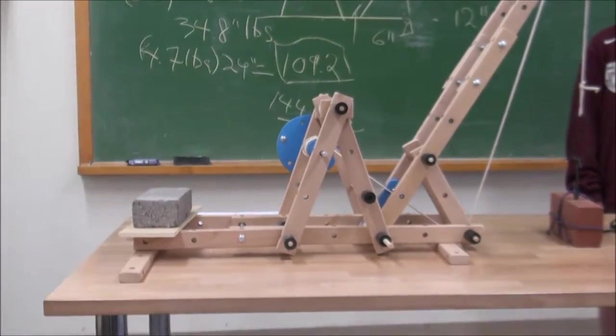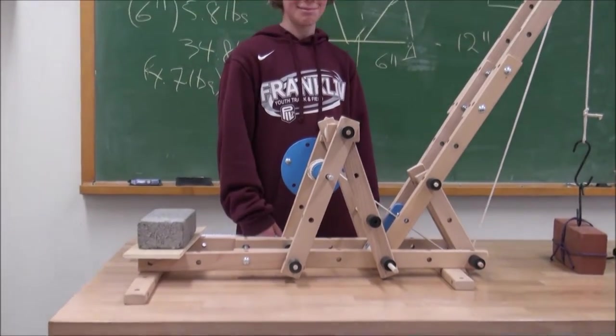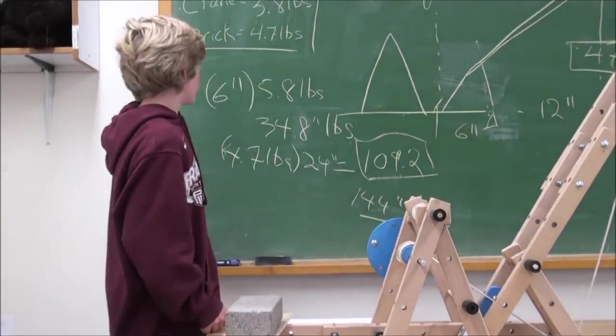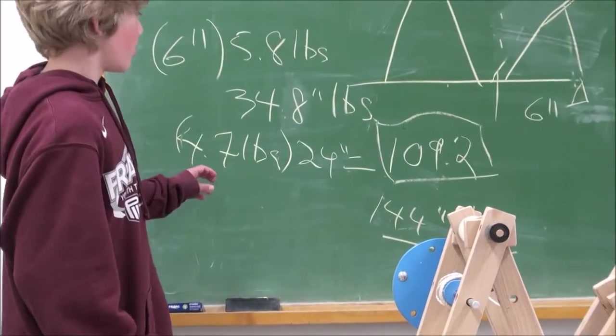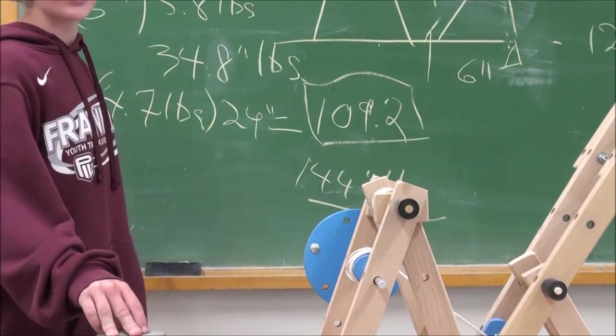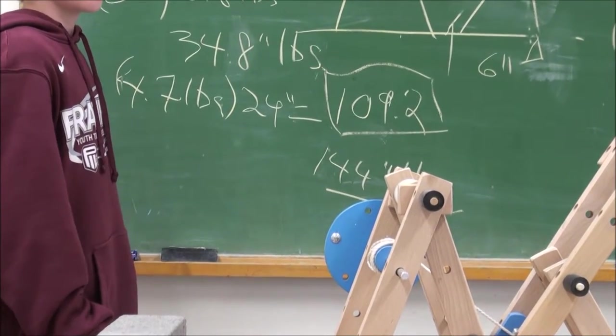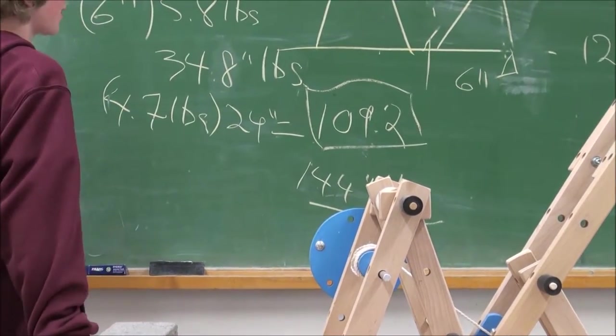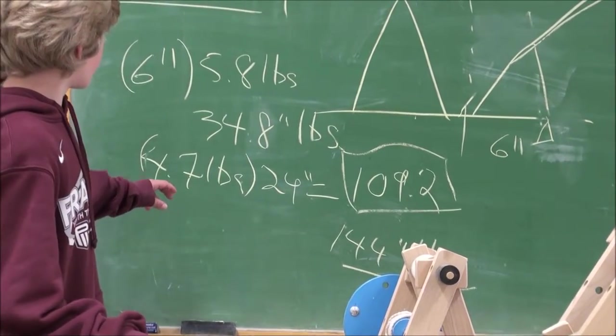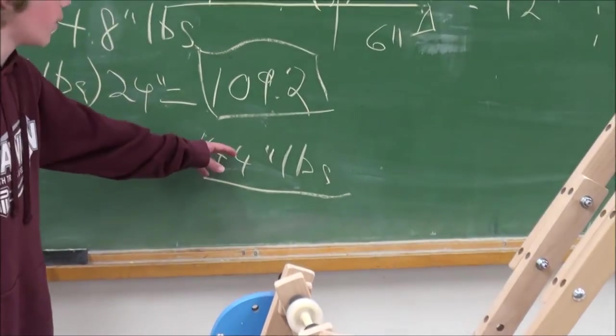We added one brick as counterweight. Show me the numbers on the board. On this side, since we added the bricks, it's now 24 inches to the pivot point, so that gives us 109. So what do we do with that 109.2? We add 34.8 to that. And we get 144 inch pounds.